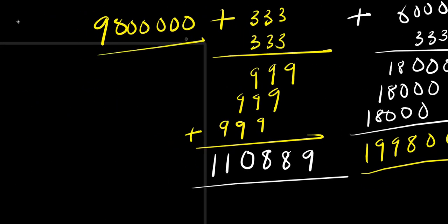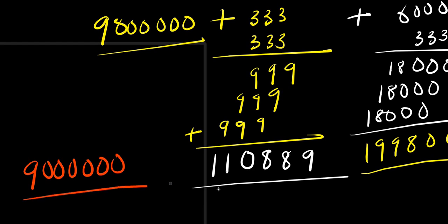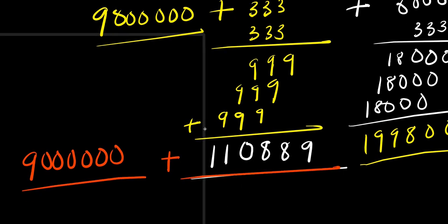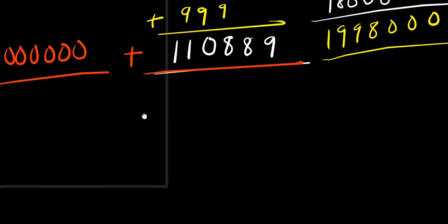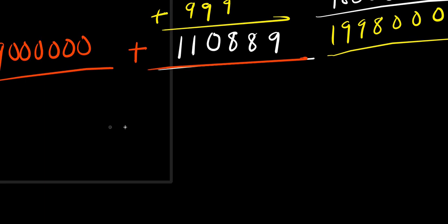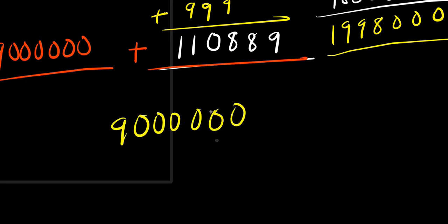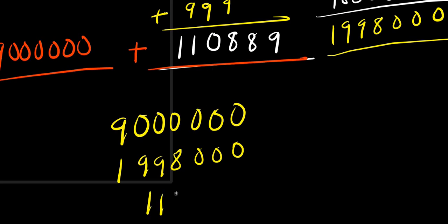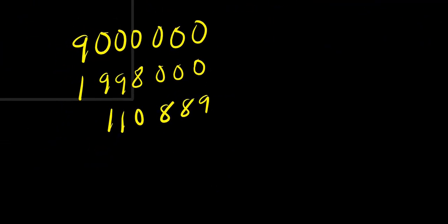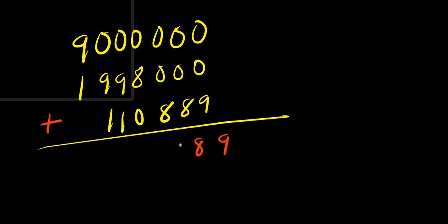Now what do we do? We are going to add 9 million, let me write it out here. 9 million plus 333 squared plus 6000 times 333. So let's add starting with 9 million. This gives us one million nine hundred and ninety-eight thousand for the 2ab term.